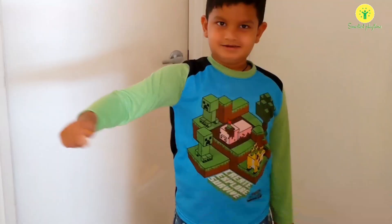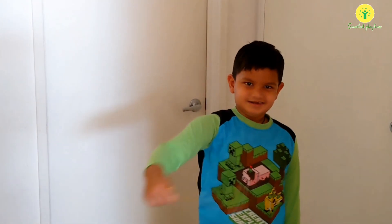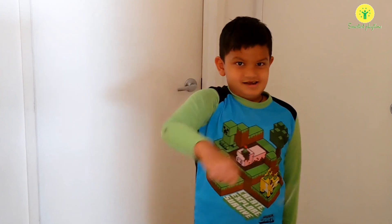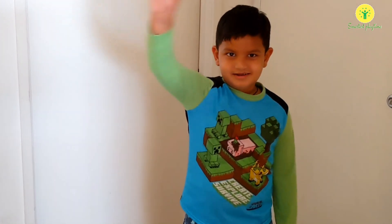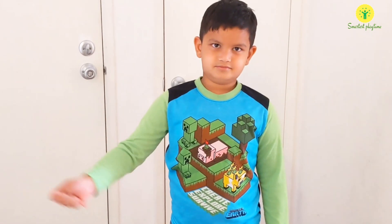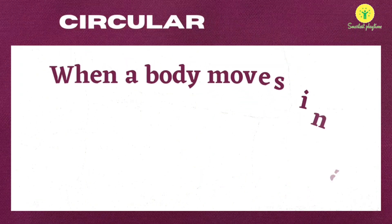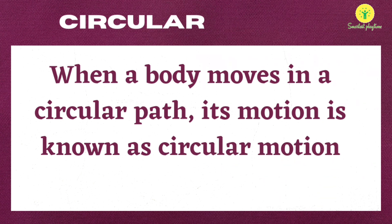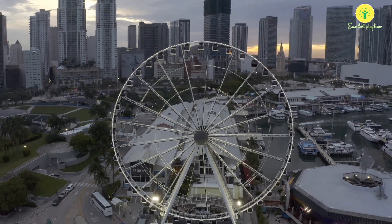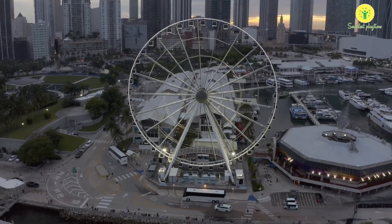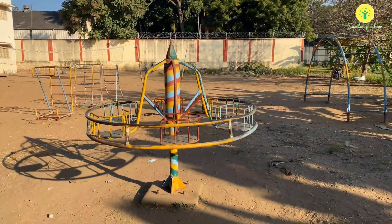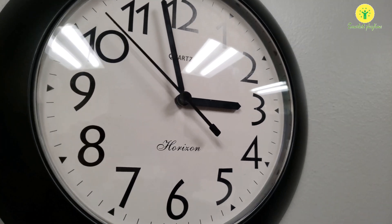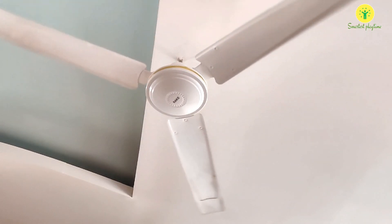Take a stone or a small piece of cardboard. Tie a thread to it and whirl it with your hand. Observe the motion of the stone — you will see that the stone moves along a circular path. In this motion, the distance of the stone from your hand remains the same. This type of motion is called circular motion. Examples include motion of a giant wheel, merry-go-round, hands of a clock, and blades of a ceiling fan rotating around the hub.